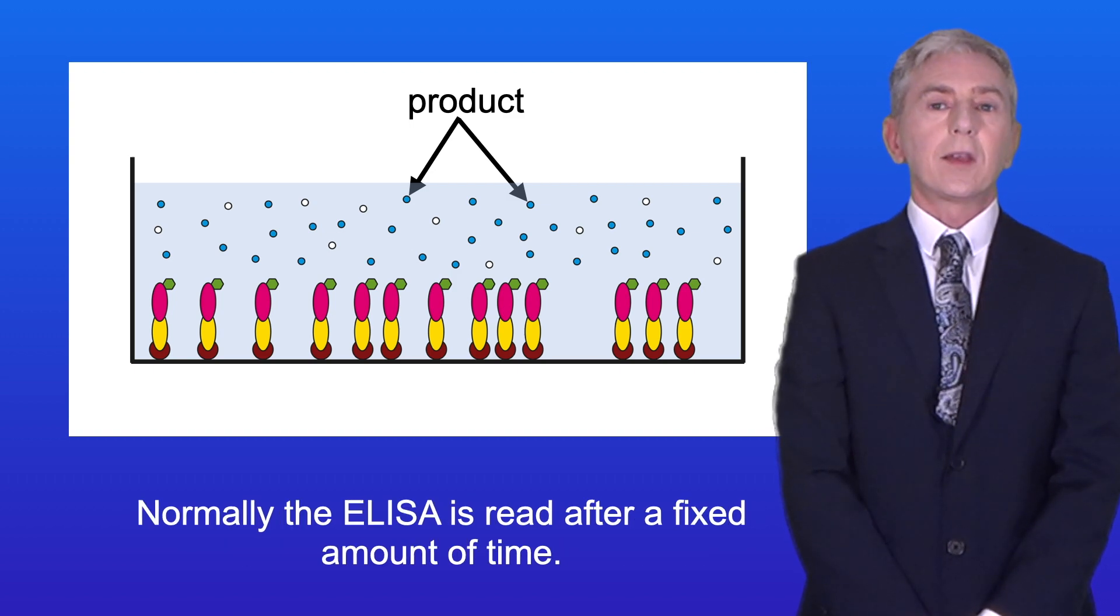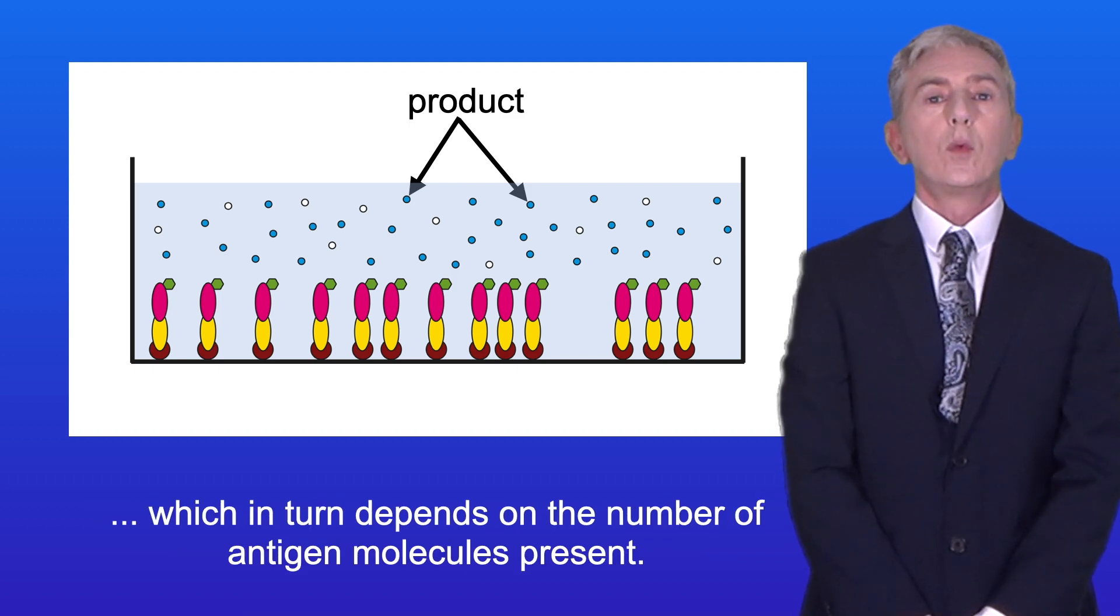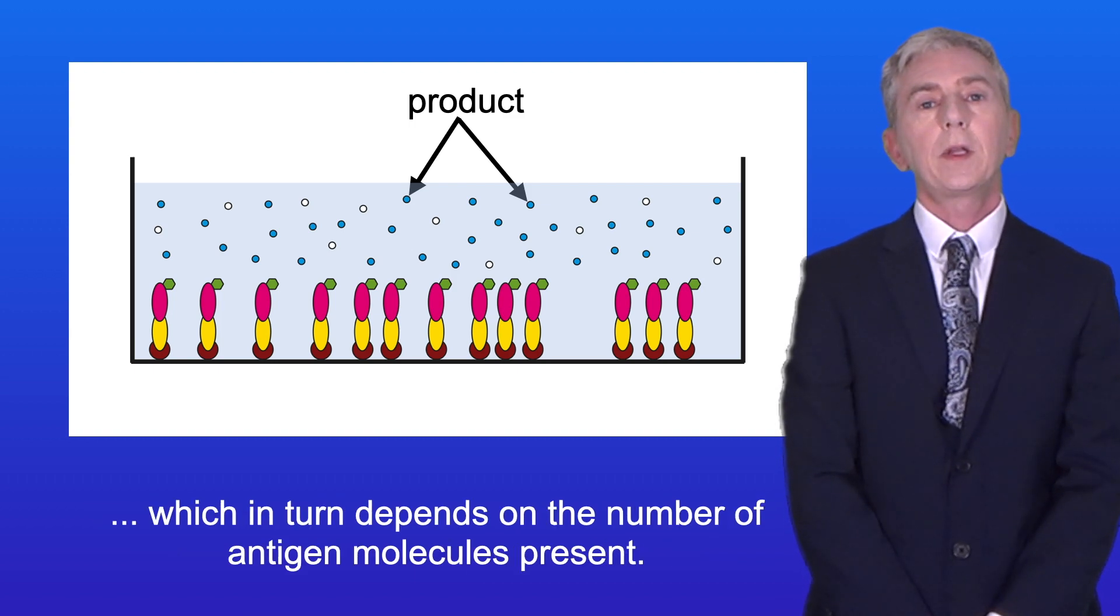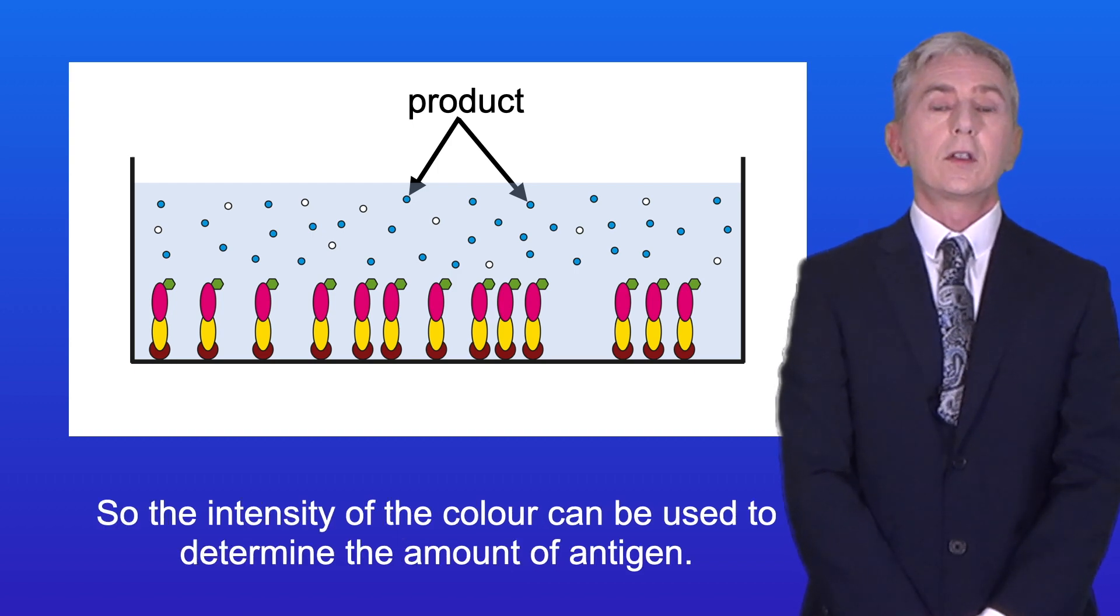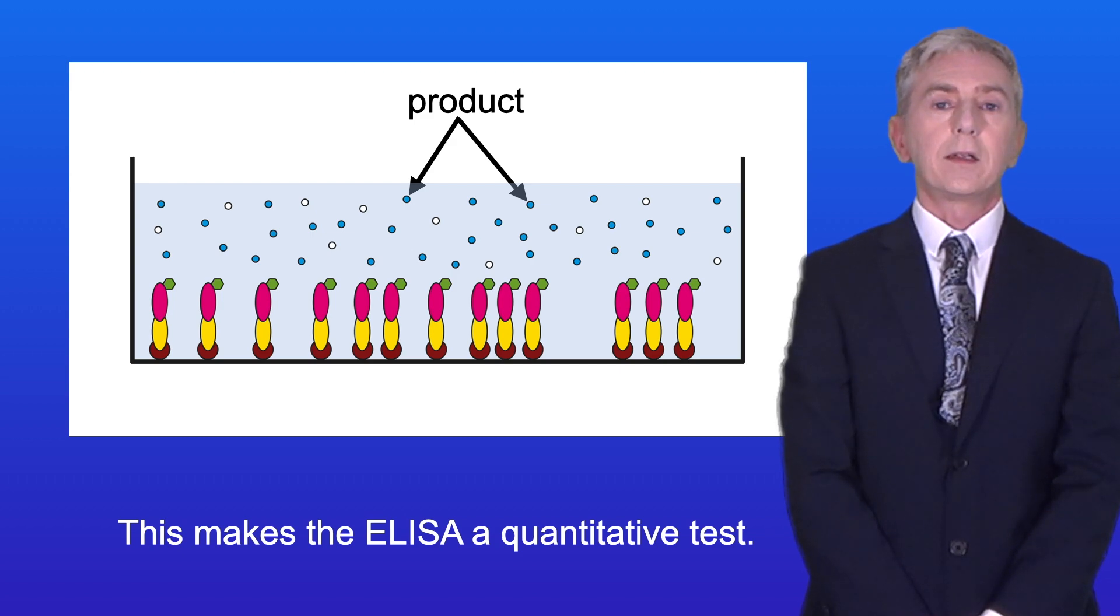Normally, the ELISA is read after a fixed amount of time, and the intensity of the color produced depends on the number of enzyme molecules, which in turn depends on the number of antigen molecules present. So the intensity of the color can be used to determine the amount of antigen, and this makes the ELISA a quantitative test.